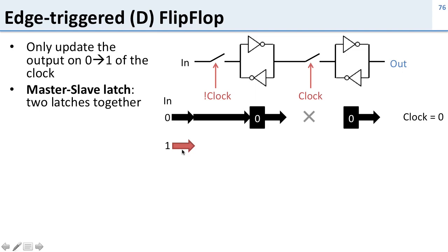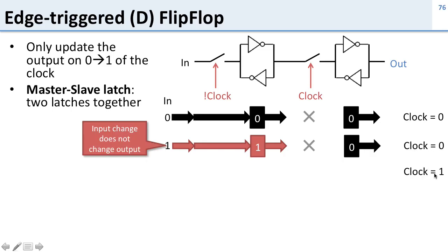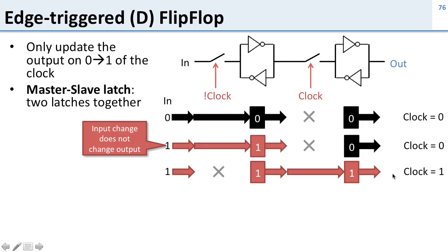Now let's try changing our input. If we change the input while the clock is still zero, we can still write into the first latch because the first switch is closed. So the value in the first latch changes, but the second latch does not change because that switch is open. Now the clock goes from zero to one. We still have our input as one. Now we can no longer write into the first latch because clock is one, so not-clock is zero and that switch is open. The value we wrote into the first latch now passes all the way to the second latch and becomes our output. The output changed exactly when our clock went from zero to one — just what we wanted.